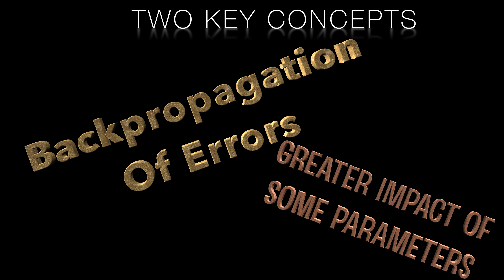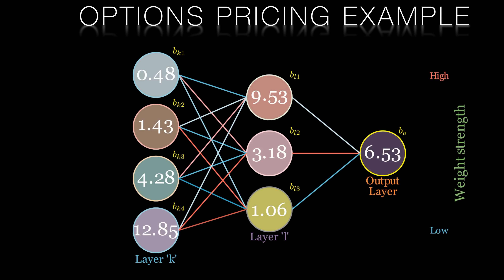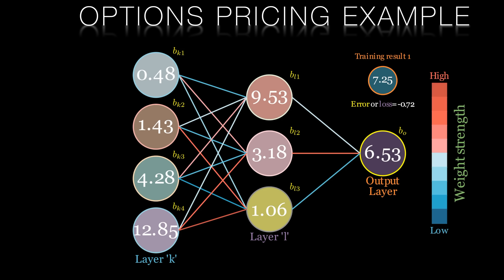I hope you find this intuition helpful, rather than just looking at equations of derivatives, which can be a little dry on their own. Let's invoke our options pricing example and focus on the last three layers of our neural network — our output layer and the two final hidden layers, which we'll label L and K. We've provided all our time series data and other parameters upstream in our input layer. Let's say our correct option price for this example is $7.25, but our output is showing the incorrect answer of $6.53 — too low by 72 cents.